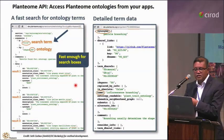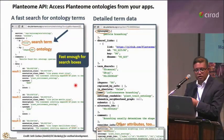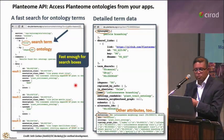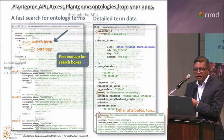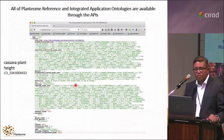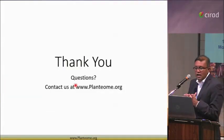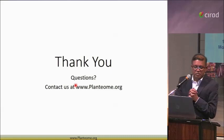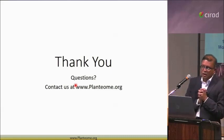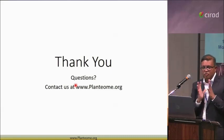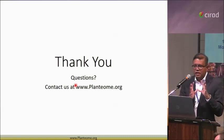Good platforms like BrAPI and Agri-portal are already building those integration capabilities — all the ontologies are in Agri-portal as well. Data is available through APIs for integration into tools and projects. For example, here's an API pulling from Cassava plant height terminologies. That's my time — keep writing your questions.